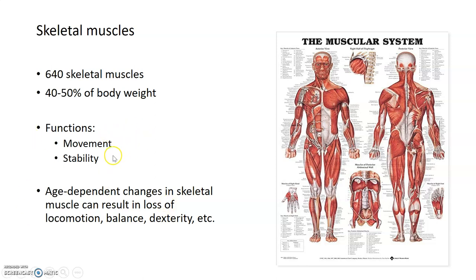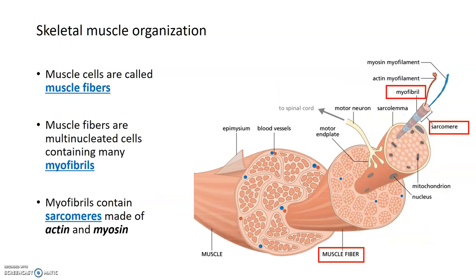Any age-dependent changes that occur in skeletal muscle can affect both our movement and stability, resulting in losses of locomotion, balance, and fine motor movements or dexterity. We're going to talk about how age-dependent changes in skeletal muscle can lead to these defects, but first it's necessary to understand how skeletal muscle is organized, how it contracts, and how it's innervated and regenerated — and that's what this lecture will focus on.